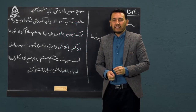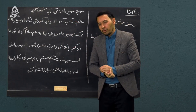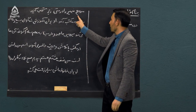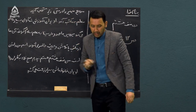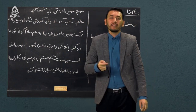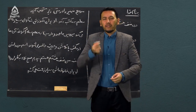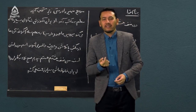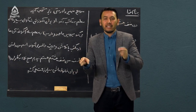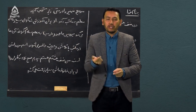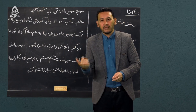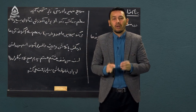شاگردان عزیز، کار خانگی جلسه قبل را با هم مرور کنیم. در جلسه قبل بیان کردیم که مرجع ضمیر را در متن زیر مشخص کنید. گفتیم ما کلمه‌ای داریم تحت عنوان ضمیر و مرجعی داریم که ضمیر به آن کلمه برمی‌گردد. ضمیر کلمه‌ایست که جانشین یک اسم می‌شود.